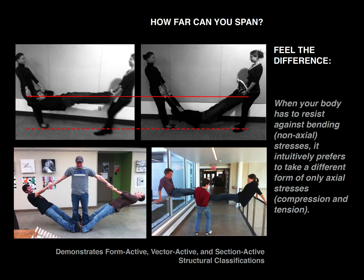When the body resists bending in a non-axial way, it intuitively prefers to take a different form. You can then say: what you did by taking that form was actually like a form-active cable system, or a vector-active system based on the stability you get from a triangle, or section-active beam behavior. These are incredibly important long-term structural lessons you can introduce right away in one of the first structural classes.